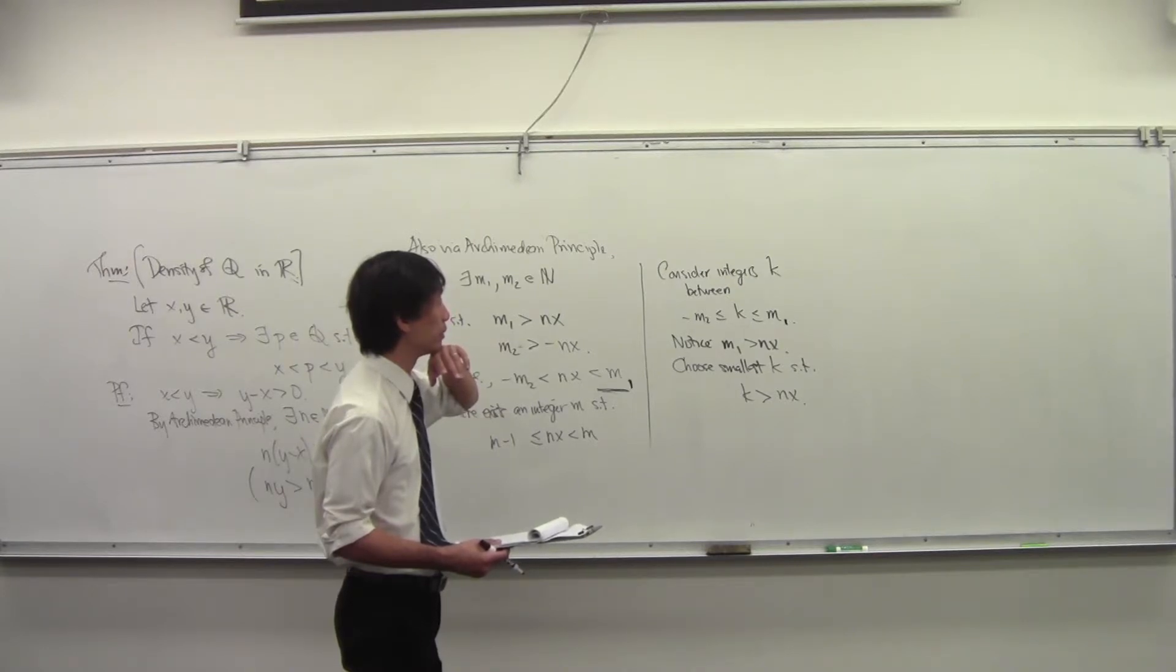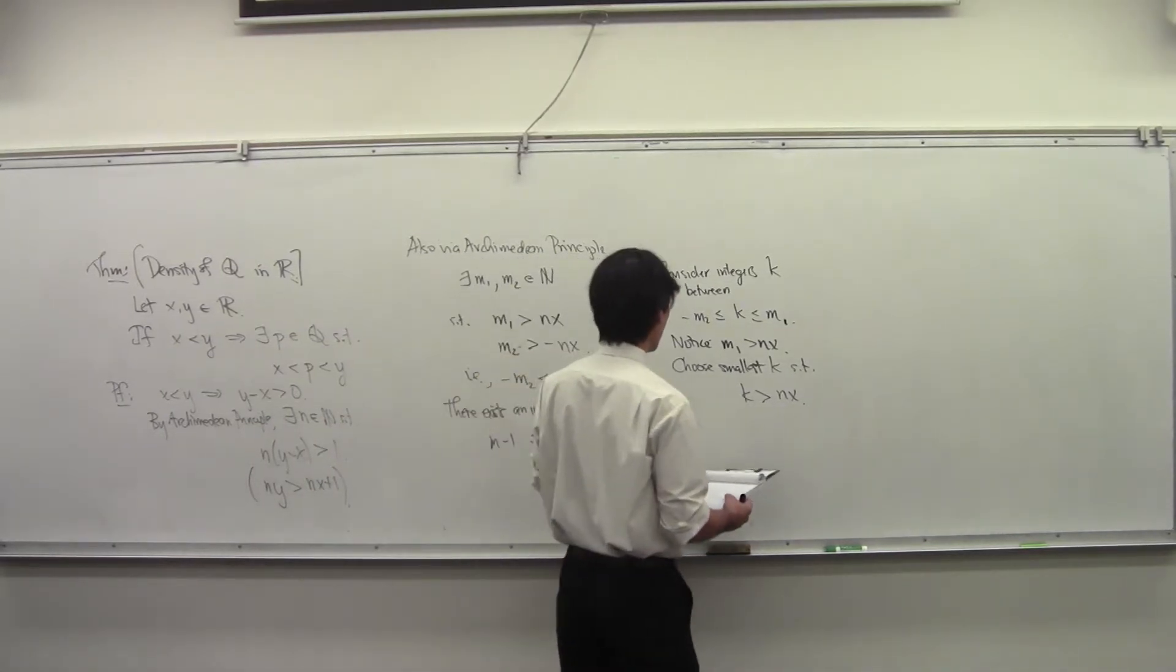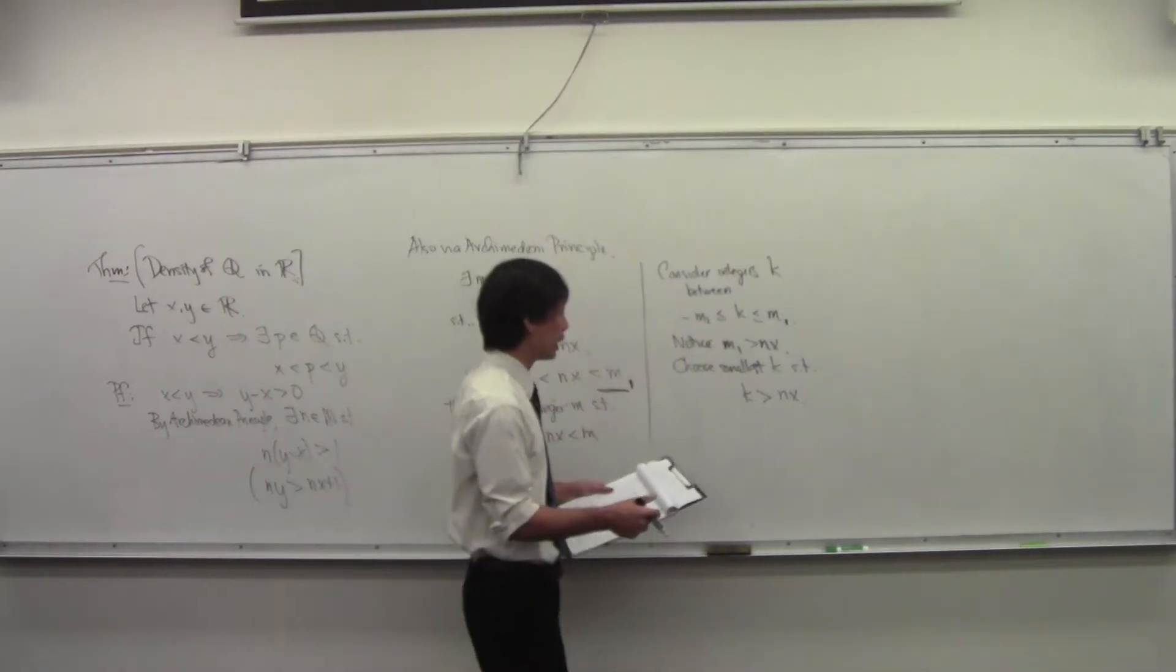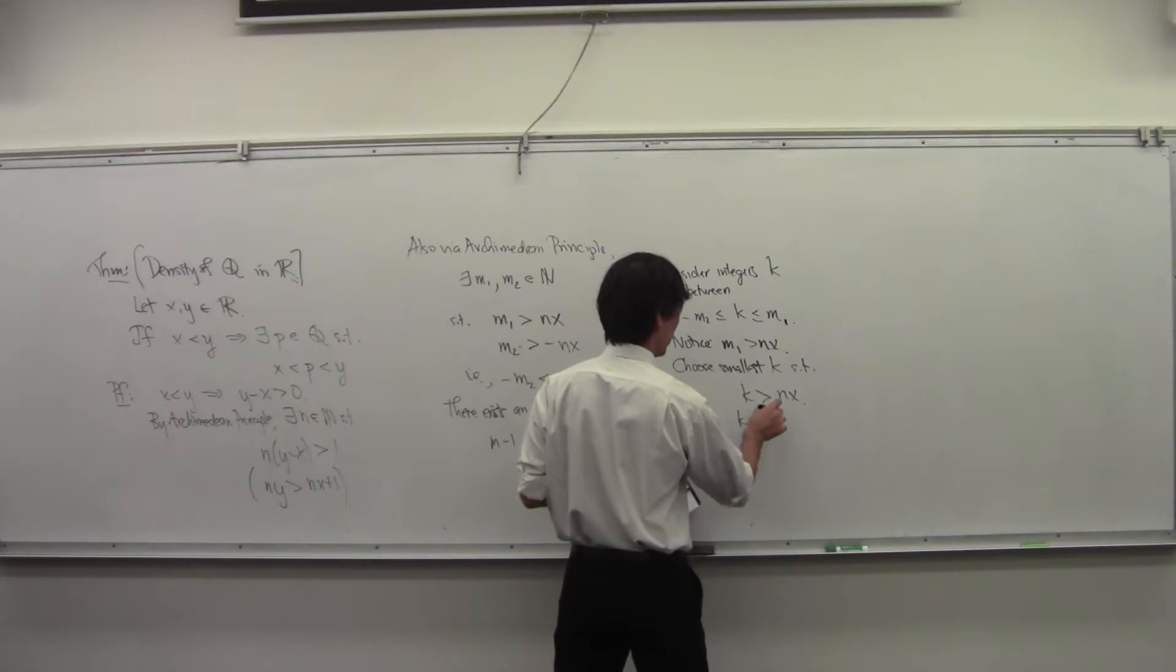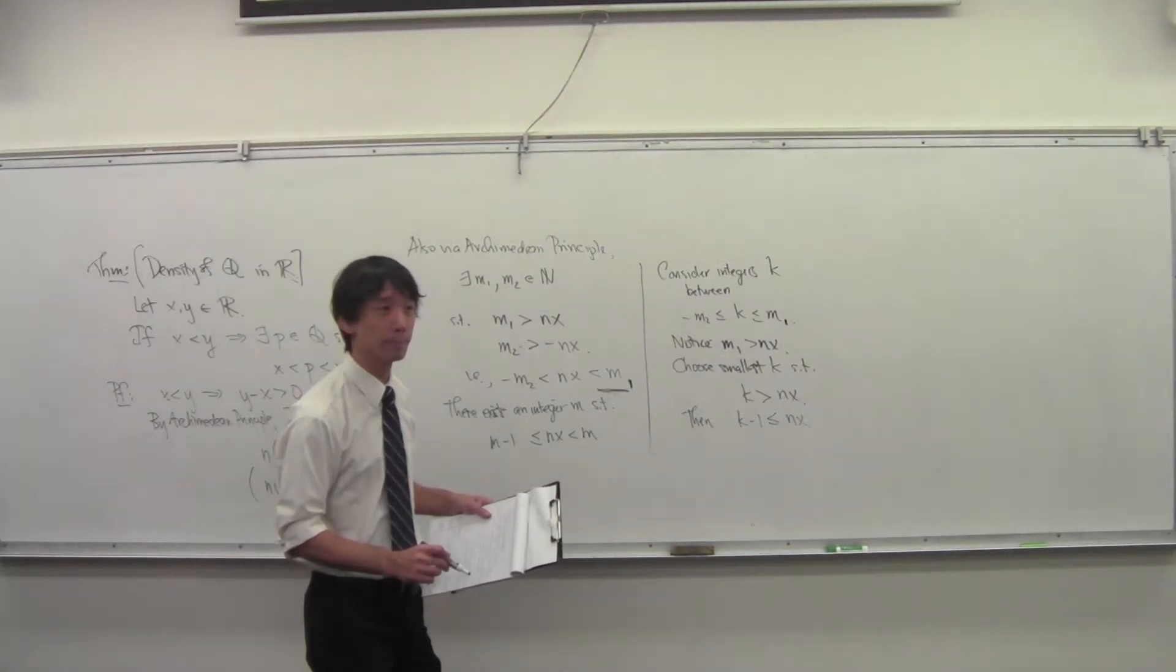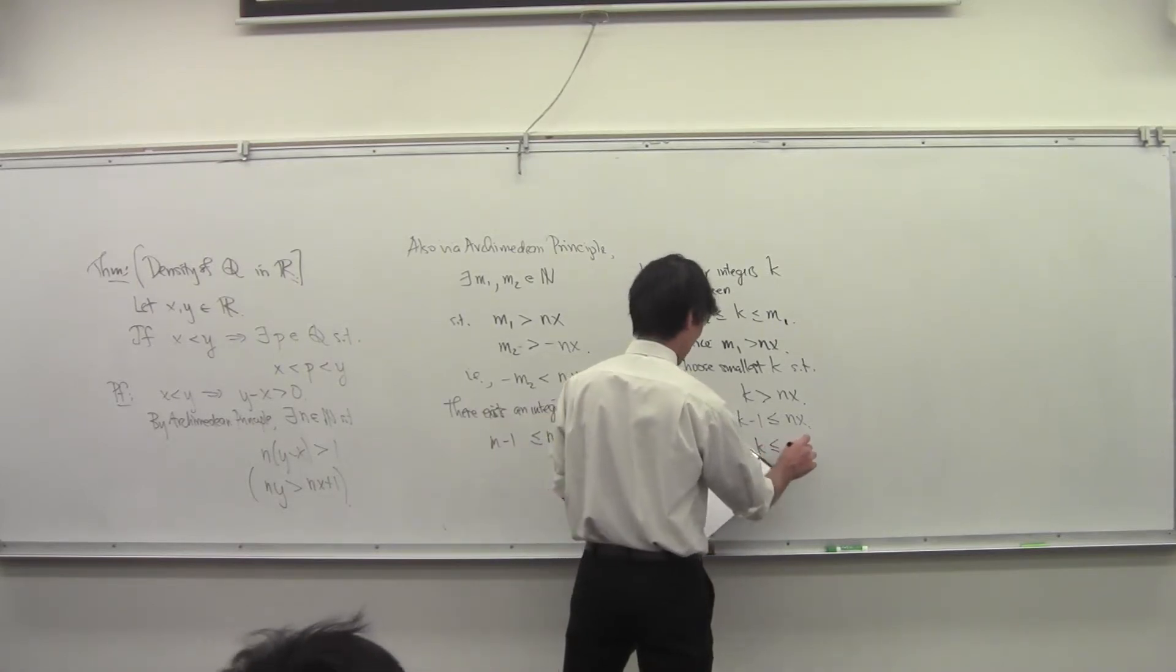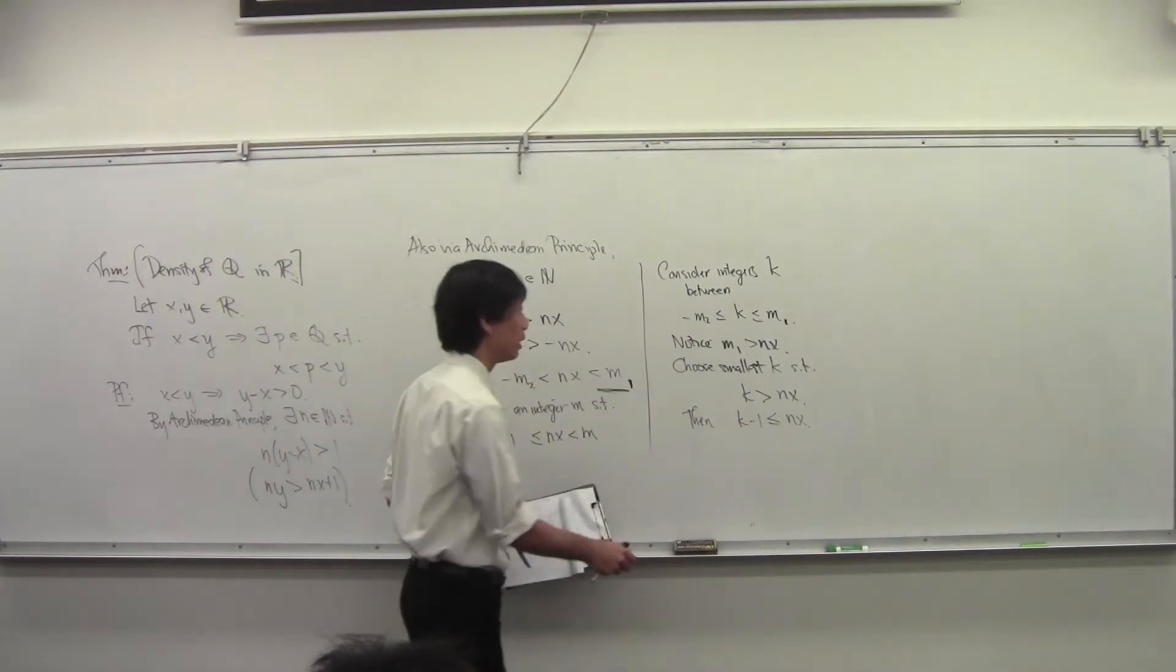So choose the smallest K such that this happens. We're not going to get all the way down to negative M2. That K is bigger than negative M2, but then K minus 1 must be less than or equal to NX. In other words, that K must be less than or equal to... yeah, that's it.